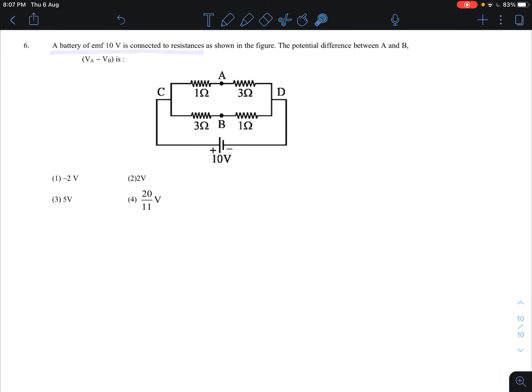In question number 6, a battery of EMF 10 volt is connected to resistances as shown in the figure. The potential difference between A and B - how much is the potential difference? We have to find out.